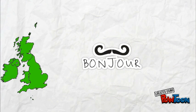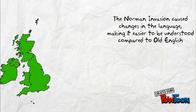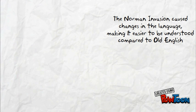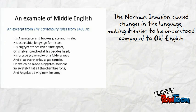The conquest of the Normans affected the previous Old English language, causing changes in grammatical systems, vocabularies, and pronunciations, making the English language transform into the more comprehensible Middle English — with an example like this excerpt from Geoffrey Chaucer's Canterbury Tales.